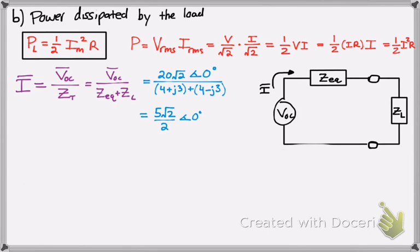We get 5 radical 2 over 2 angle 0. Just to let you know, the denominator simplifies, I believe, as 8. And 20 radical 2 divided by 8 simplifies to 5 radical 2 over 2.